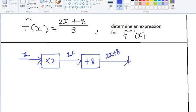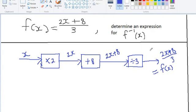And lastly we divide by 3. As seen here, divide by 3 underneath. So we have 2x plus 8 all over 3, which is the same as f of x. So we have constructed our f function using a number machine.